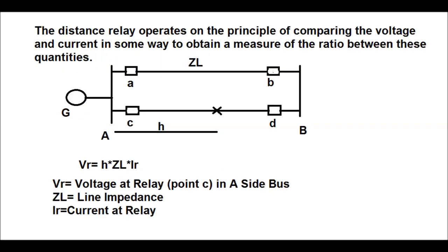The distance relay operates on the principle of comparing the voltage and current in some way to obtain a measure of the ratio between these quantities in terms of impedance. In this figure, two substations have been shown. The line impedance is shown by ZL. A fault occurs at a distance of a fraction H of the line. Vr is the voltage seen at relay point C of bus A, equal to H × ZL × IR. IR is the current at the relay, ZL is the line impedance, and Vr is the voltage at relay point C on the A side of the bus.